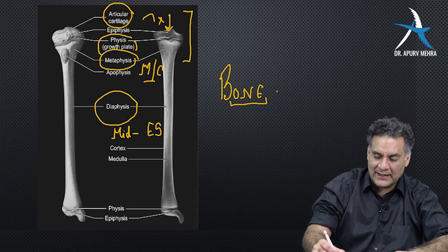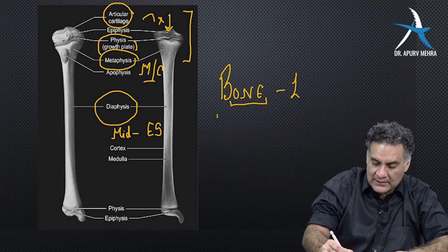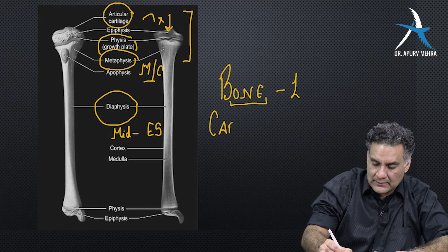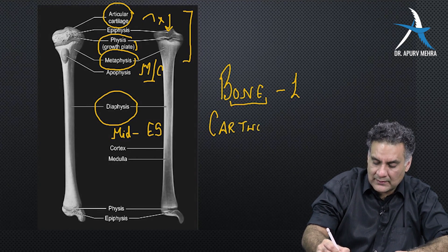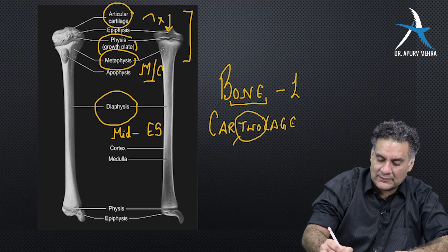Cartilage - you can write it like this - cartilage. It has two, so it has type two collagen.